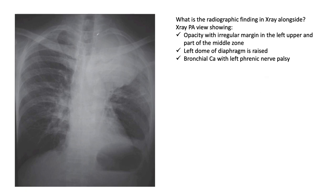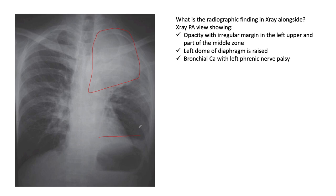There is an opacity in the left upper and part of the left middle zone with an irregular margin. Notably, the left hemidiaphragm is higher than the right — opposite of normal — suggesting a problem with the phrenic nerve. Putting these findings together, this is probably a bronchial carcinoma with a left phrenic nerve palsy.